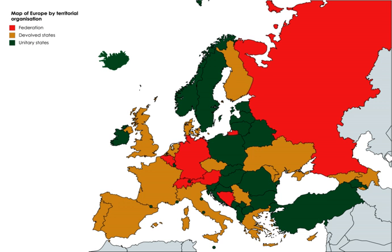Although South Africa bears some elements of a federal system, such as the allocation of certain powers to provinces, it is nevertheless constitutionally and functionally a unitary state.